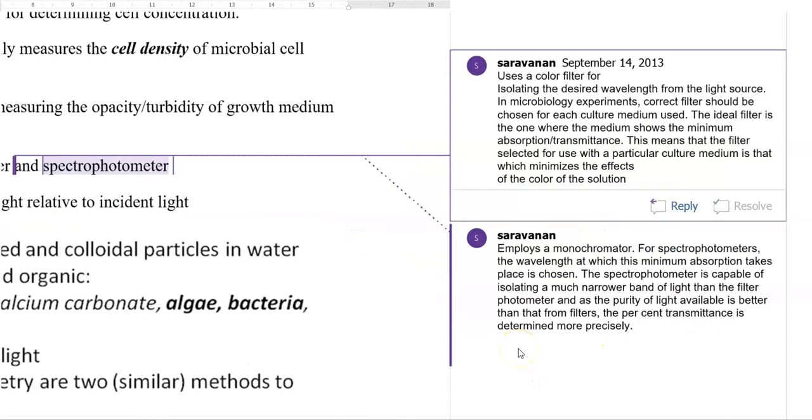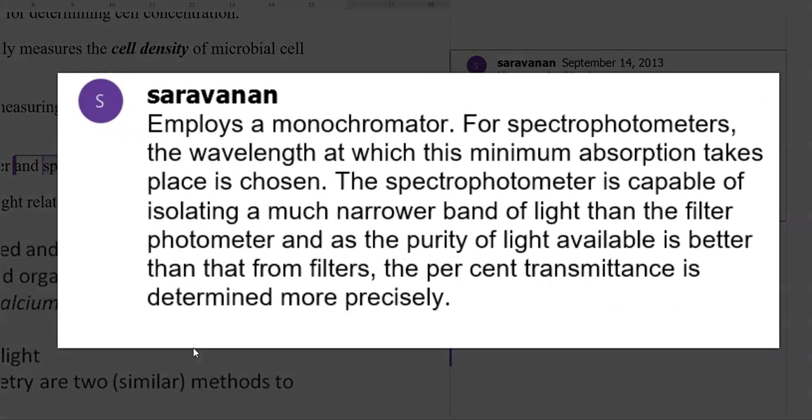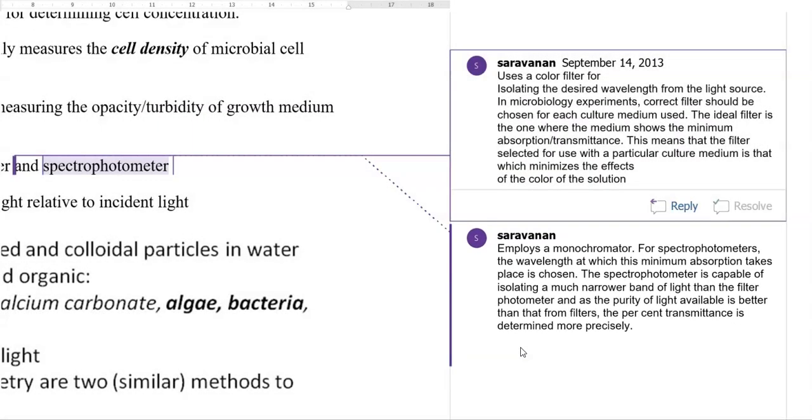The next one is the spectrophotometer, which is also a turbidometry measurement commonly used in microbiology to measure protein content and the number of cells in samples. It uses a monochromator, whereas colorimeter uses different filters. In a spectrophotometer, the wavelength at which minimum absorption takes place is chosen. The spectrophotometer is capable of isolating a much narrower band of light than filters commonly used in colorimeters. The purity of light available in the spectrophotometer with a monochromator has better characteristics compared to light separated through filters in colorimeters. Thus, using spectrophotometer, the percent transmittance is determined more precisely.